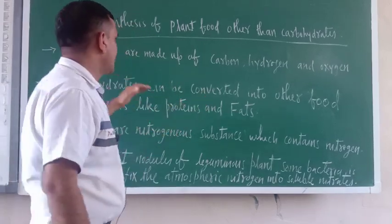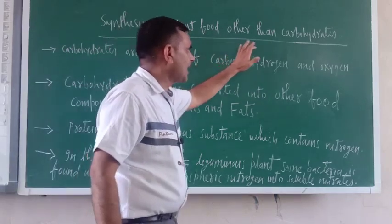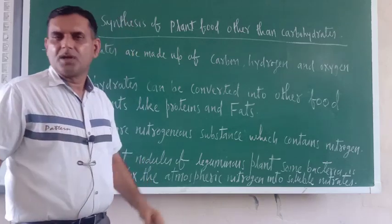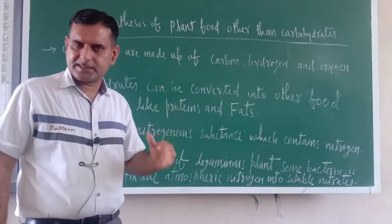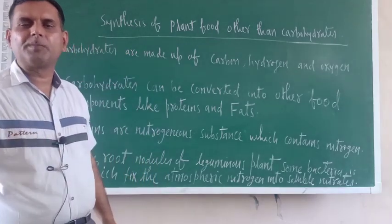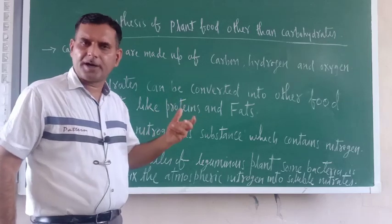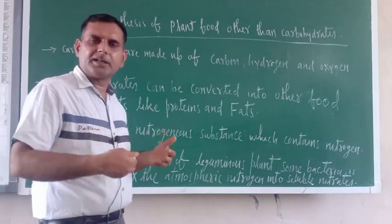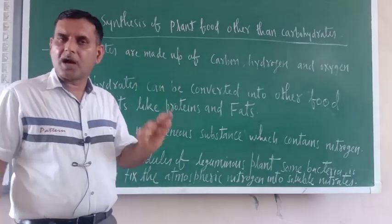Before teaching about the stomata, let us have an idea about this particular heading: synthesis of plant food other than carbohydrate. In photosynthesis, plants absorb water and carbon dioxide gas from the atmosphere, and minerals from the soil, and they synthesize glucose or carbohydrate or starch. That is our food — we take that food from the plants.